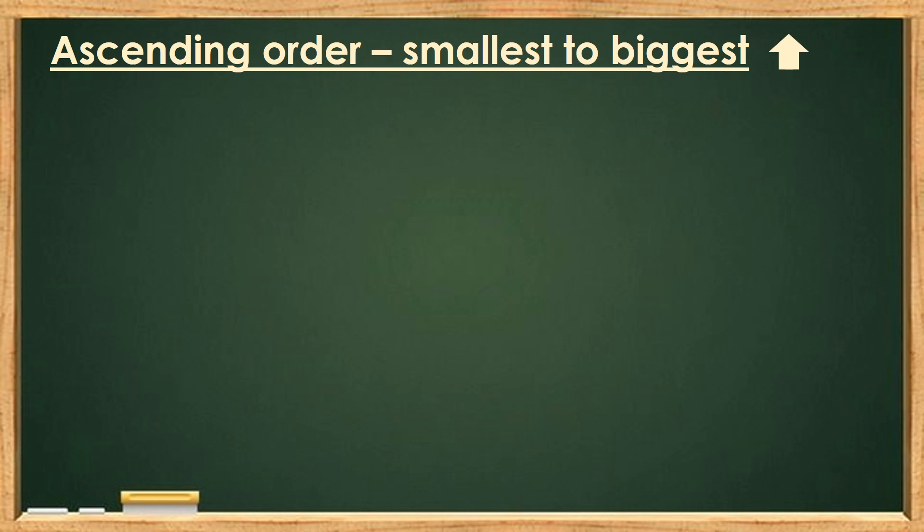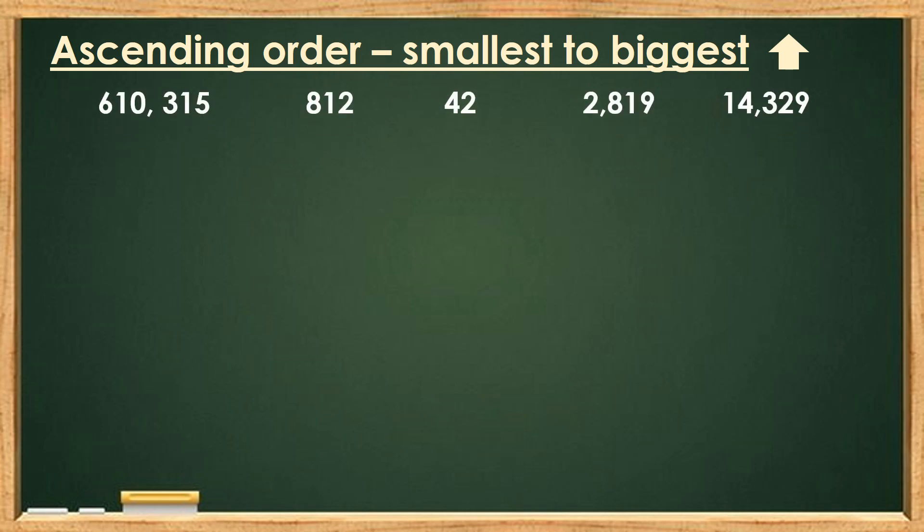Let's look at some examples. Let's arrange the following numbers in ascending order. Again, ascending means smallest to biggest. It's better to follow some steps so you can arrange them accurately.